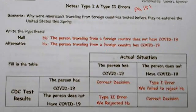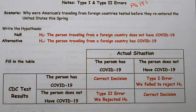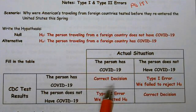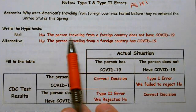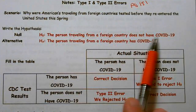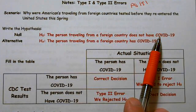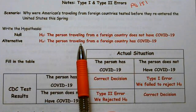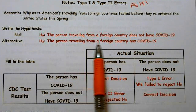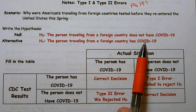So the null hypothesis — remember, the null hypothesis is always based on innocence. Innocence in this case would be that you did not have COVID. So the person traveling from a foreign country does not have COVID. The alternative is the person traveling from a foreign country has COVID.